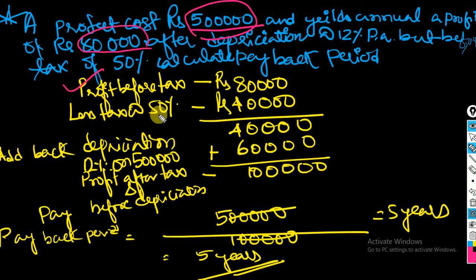So we have to deduct the income tax on this asset. So it will be 50% of this 80,000, which is 40,000. Now if the depreciation has already been deducted, you have to add that depreciation. So 12% on 5 lakhs, it will be 60,000. So if you add 40,000 with 60,000, it will be 1 lakh. So this is the profit after tax but before depreciation.